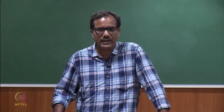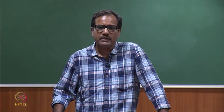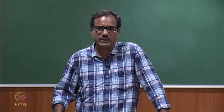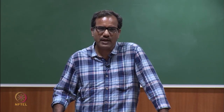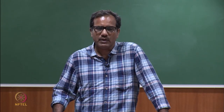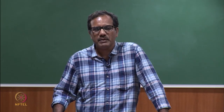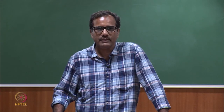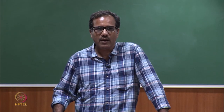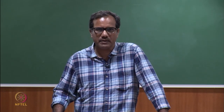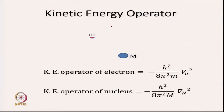For calculation of energy, we need to first write the Schrödinger equation for an atom. We will start with the kinetic energy operator, because the Schrödinger equation consists of applying the Hamiltonian operator on a wave function to get the energy. The Hamiltonian has two parts: kinetic energy operator and potential energy operator. So first we will look at how to calculate the kinetic energy operator for an atom. An atom has an electron with mass m, and a nucleus with mass capital M.